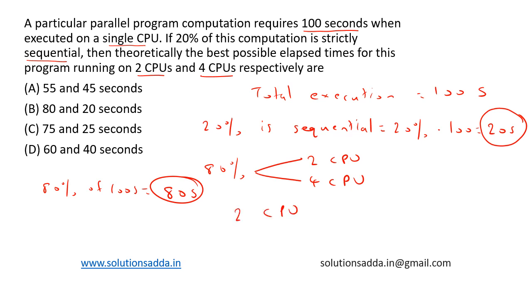Now in 2 CPUs this can be divided into two parts, that is 80 by 2, we can run it in 40 seconds.